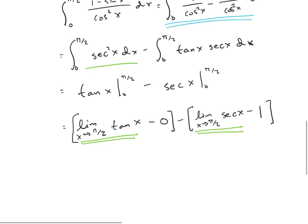But let's look at them. So this is limit as x approaches pi over 2. This is tangent of x is sine of pi over 2 divided by cosine of pi over 2, and this is going to be minus the limit as x approaches pi over 2 of 1 over cosine of pi over 2.